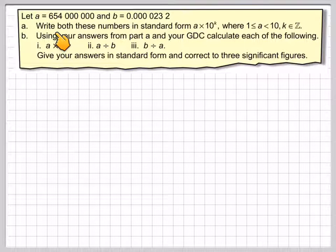Let A be 654,000,000 and B be 0.0000232. Write both these numbers in standard form, A times 10 to the K, where A is a number between 1 and 10 and K is an integer.